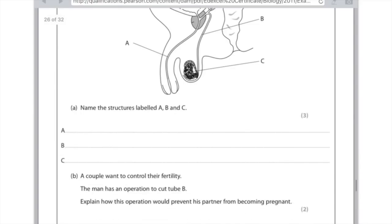B, a couple want to control their fertility, the man has an operation to cut tube B. Sounds painful. Explain how this operation would prevent his partner from being pregnant. Right, well if we cut tube B we can see automatically that there's no connection anymore between the testicle and everything else. So effectively the sperm can't enter the penis and no fertilisation can ever occur.